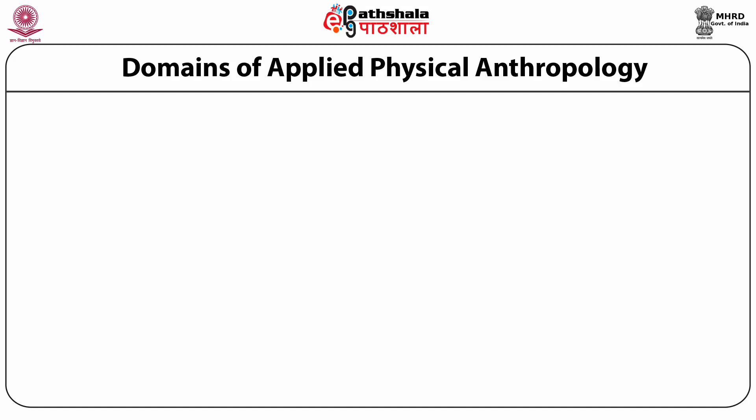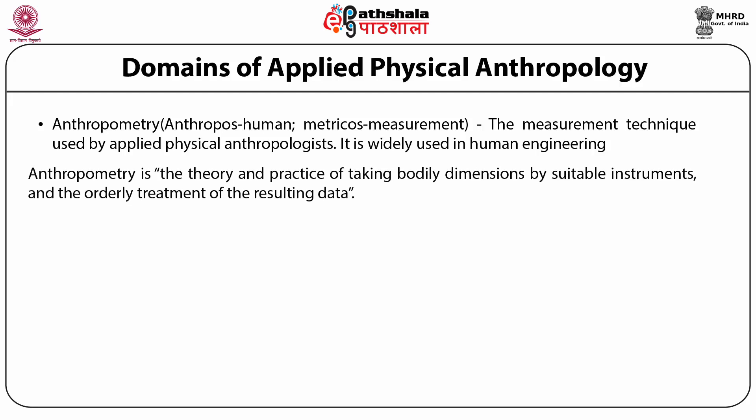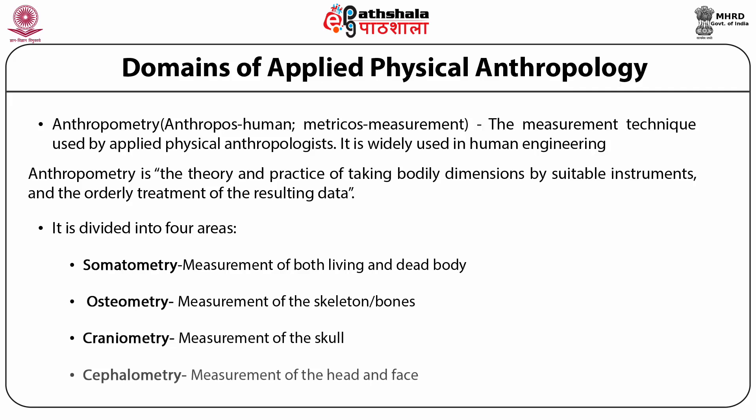The domain of Applied Physical Anthropology: the measurement technique used by applied physical anthropologists is termed as Anthropometry. Hansen and Kornock (1958) described Anthropometry as the theory and practice of taking bodily dimensions by suitable instruments and the orderly treatment of the resulting data. The technique is widely used in human engineering. It is divided into four areas: somatometry, concerned with measurement of both living and dead body; osteometry, measurement of the skeleton or bone; craniometry, measurement of the skull; and cephalometry, concerned with measurement of head and face.